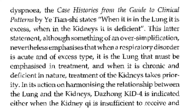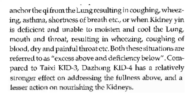Although something of an oversimplification, this nevertheless emphasizes that when a respiratory disorder is acute and of excess type, it is the lung that must be emphasized in treatment; and when it is chronic and deficient in nature, treatment of the kidneys takes priority. In this action of harmonizing the relationship between lungs and kidneys, Kidney 4 is indicated when kidney Qi is insufficient to receive the Qi from the lungs, resulting in coughing, wheezing, asthma, shortness of breath — or when kidney Qi is deficient and unable to moisten and cool the lungs, resulting in wheezing, coughing of blood, dry and painful throat.